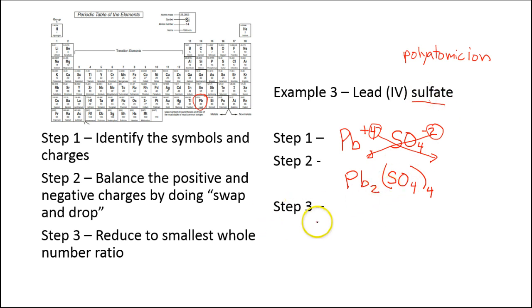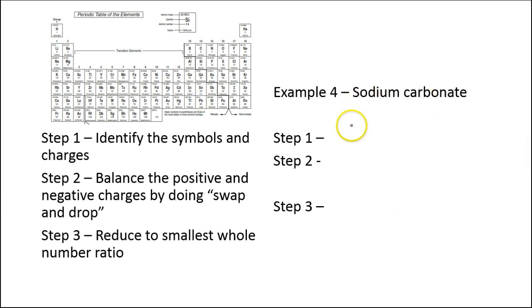Now we have to look at our last step, reduce to smallest whole number ratio. So you can see we have 2 and 4, and this can be simplified to Pb. So 2 can go into this, becomes 1. 2 goes into 4, 2 times. So now we have Pb(SO4)2. This is our final formula. I have one more for you, sodium carbonate, and here's our sodium.